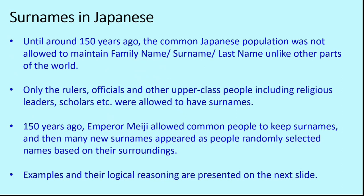About 150 years ago from now, there was a famous emperor whose name was Meiji. You can learn about him on the internet. Emperor Meiji brought many changes to Japanese society, one of which was allowing common people to keep surnames. That was a major change brought into Japanese society.